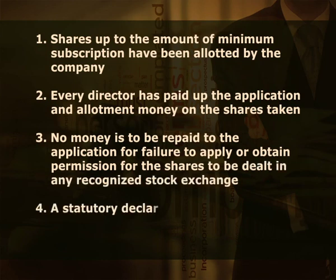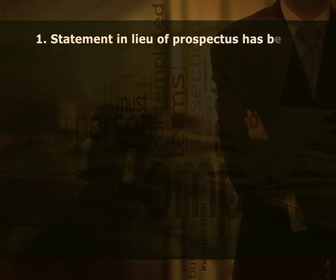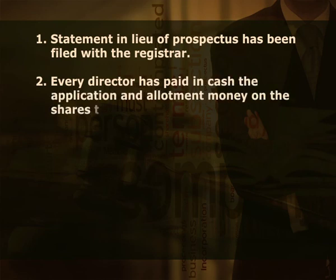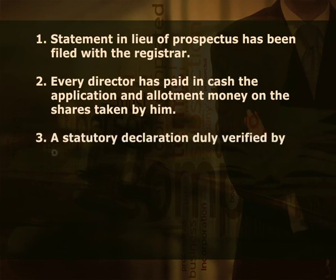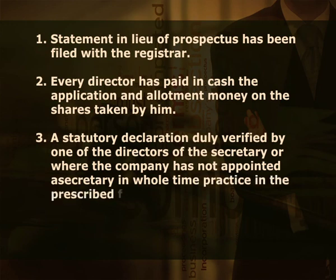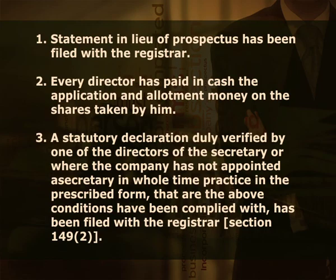Fourth, a statutory declaration duly verified by one of the directors has been complied with under section 149 sub-clause 1. Where the company has not issued a prospectus but has share capital, it shall not commence business unless: first, a statement in lieu of prospectus has been filed with the registrar; second, every director has paid in cash the application and allotment money on the shares taken by him; third, a statutory declaration duly verified by one of the directors or the secretary has been filed with the registrar, under section 149 sub-clause 2. When the company has complied with the aforesaid conditions, the registrar of companies will issue a certificate to commence business.